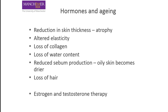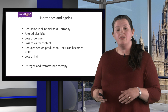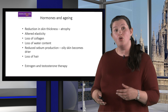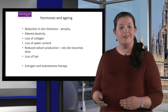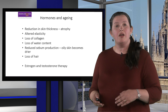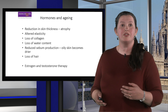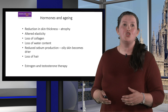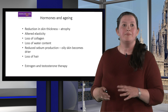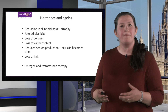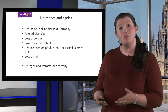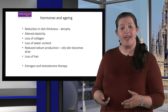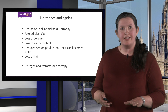Hormones also affect skin aging. We see a reduction in skin thickness as we age, and when we lose oestrogens and testosterone we have altered elasticity. This increases the rate at which we lose collagen. There is evidence that with hormone loss we also lose water from our skin, and sebaceous glands become less active — so once-oily skin can become much more dry as we age. We also see loss of hair.